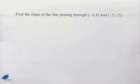Here's a problem dealing with the slope of a line. Find the slope of the line passing through the point (-3, 4) and the point (-5, -2).